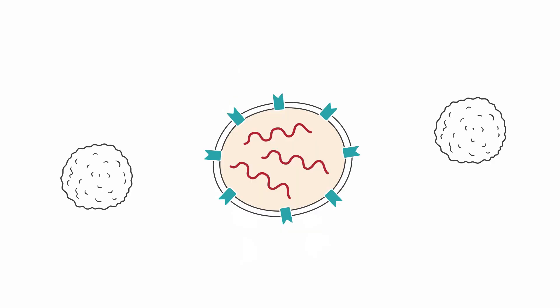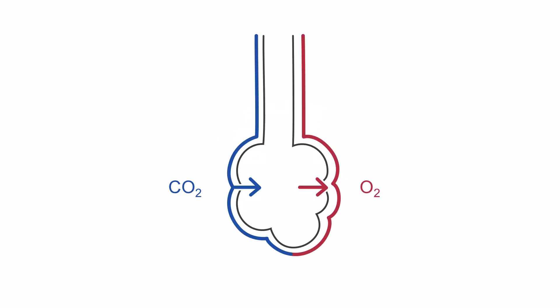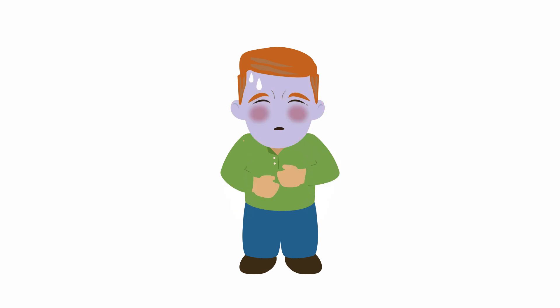White blood cells release chemokines in order to kill the virus-infected cells. Pus — a collection of fluid and dead cells — is left behind and interferes with the lungs' ability to transfer oxygen to the blood and CO2 out of it. By this point, the patient will likely have a worsening cough, fever, and rapid and shallow respiration.